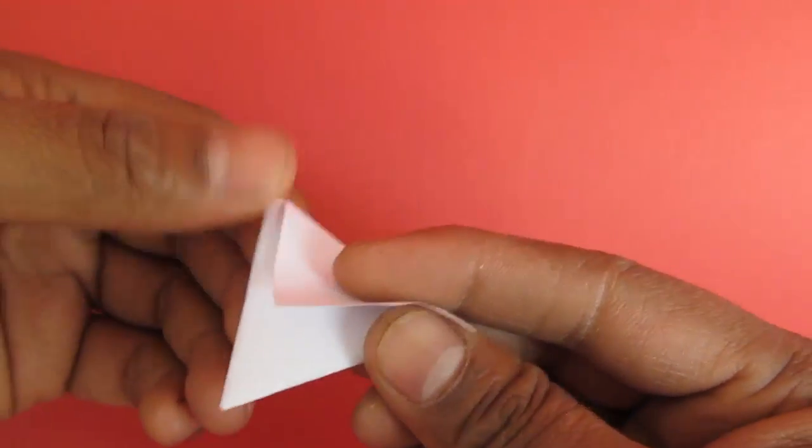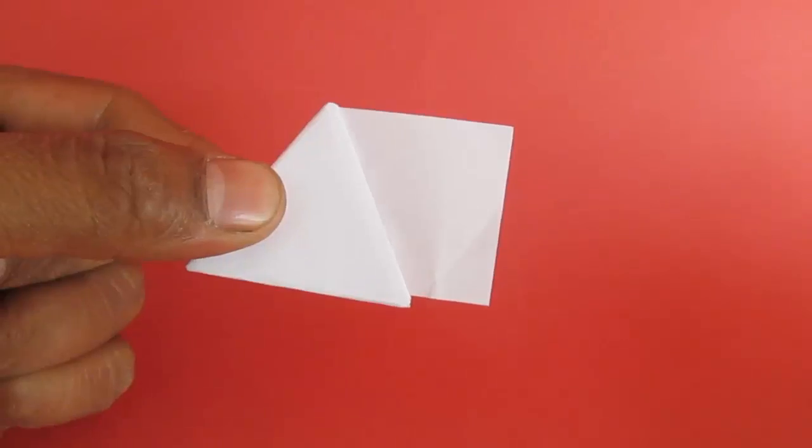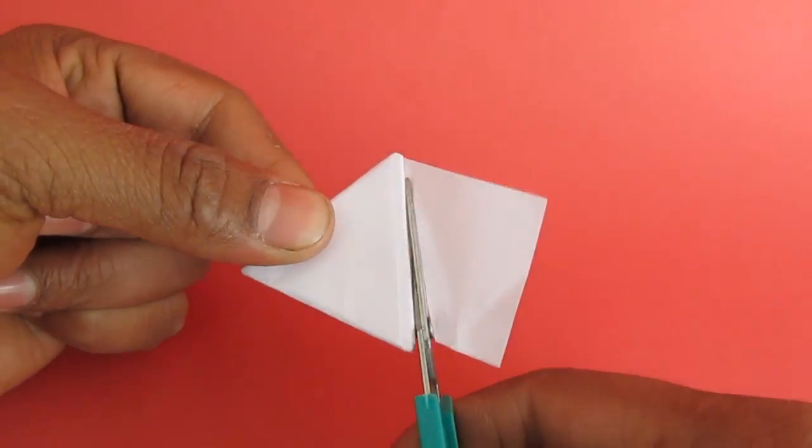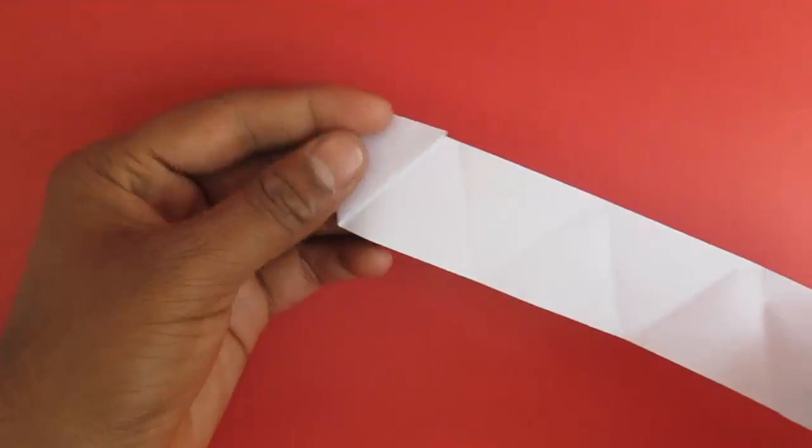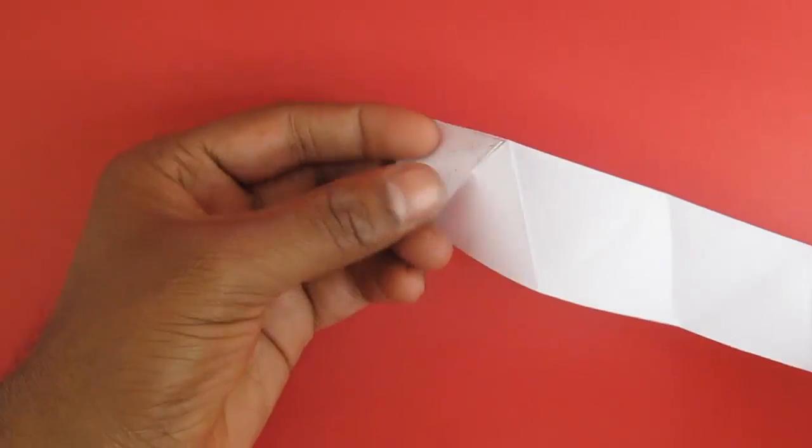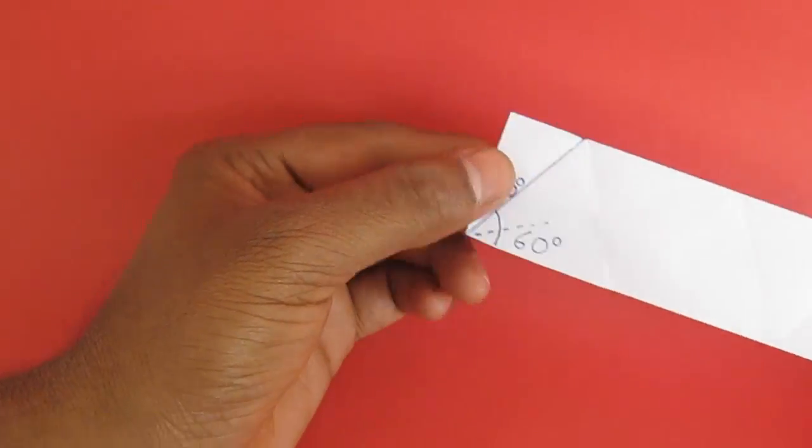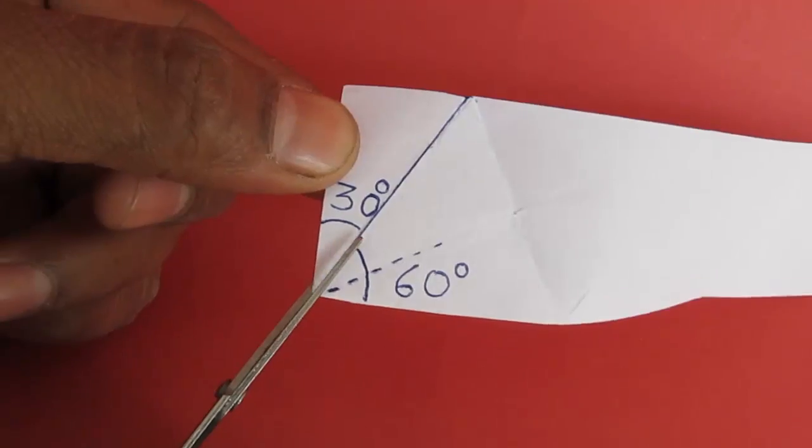Cut off the remaining part of the strip and the initial part and now your strip will have 10 equal triangles.